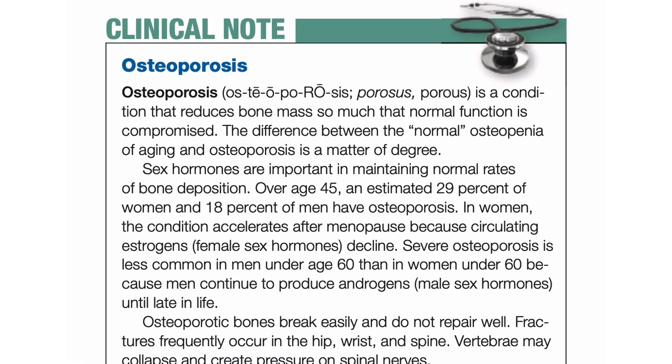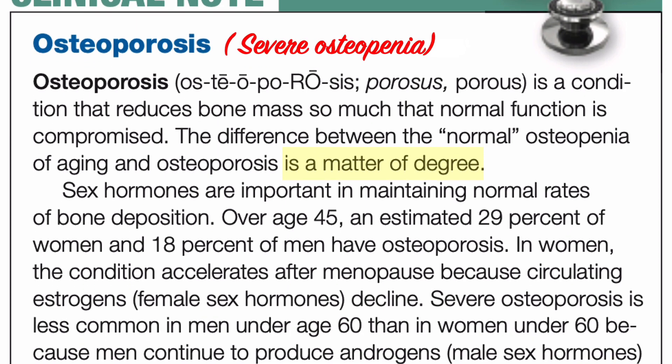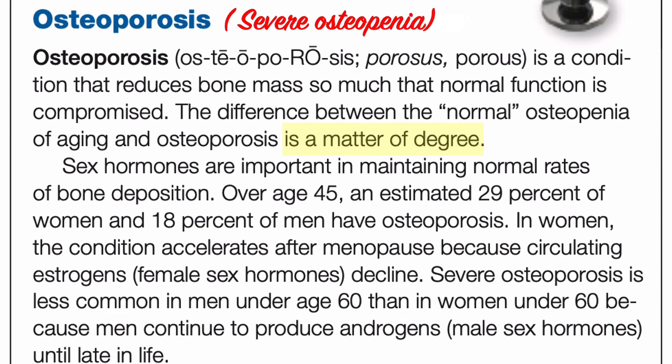Osteoporosis — literally meaning 'porous bone' — is a condition that reduces bone mass so much that normal function is compromised. The difference between the normal osteopenia of aging and osteoporosis is a matter of degree; that is, osteoporosis is severe osteopenia. Sex hormones are important in maintaining normal rates of bone deposition.